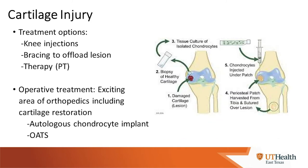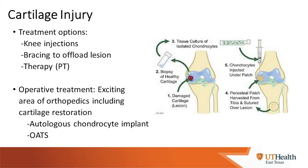Treatment options for cartilage injury include addressing it acutely especially if there's locking or catching. For chronic problems: knee injections to decrease inflammation, bracing to offload the lesion, and physical therapy. If those fail or it's a discrete lesion in a young patient, we can restore cartilage through autologous chondrocyte implantation — taking your cartilage cells, growing them in a lab, multiplying them, and placing them back in the knee — which has shown good long-term results.